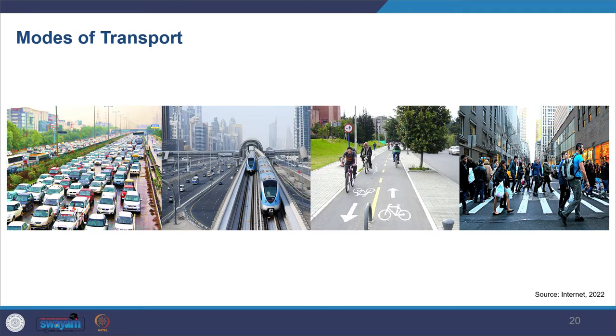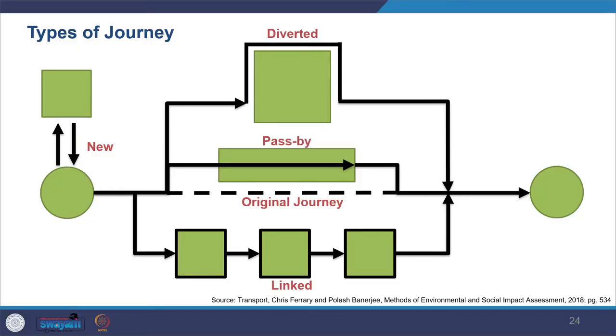These are some basic concepts of transportation. Looking at different modes of transportation — once you have the trip ideas, you divide them by how many trips would be made by different modes. When you talk about trips, you also look at terms like new trips and pass-by trips. New trips are those trips that did not occur anywhere else on the transportation network — you're generating new trips because of whatever development is happening, creating people to move from one place to another.